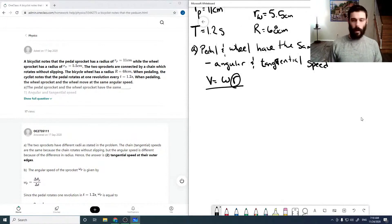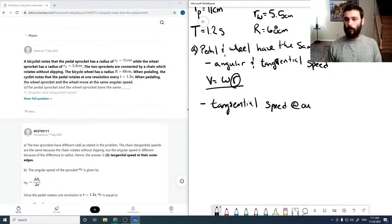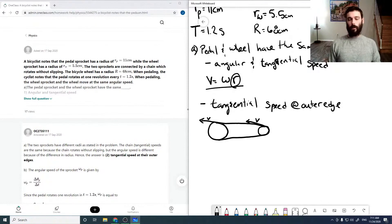Okay, so moving forward from there, tangential speed at outer edge. So, in this case, we have our pedal sprocket attached to our wheel sprocket, and so that means that the tangential speed here is being directly linked here.